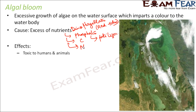Some of the effects of algal bloom are that it is toxic to humans and animals. If algal bloom is formed on a river, it is not advisable to use that water for drinking or cooking, because the entire water has turned toxic due to the excess nutrients. It also kills aquatic life — the entire aquatic ecosystem gets blocked and aquatic life gets killed because the water is polluted.